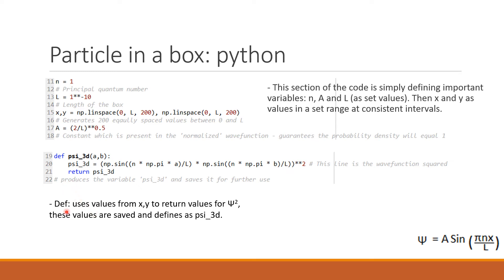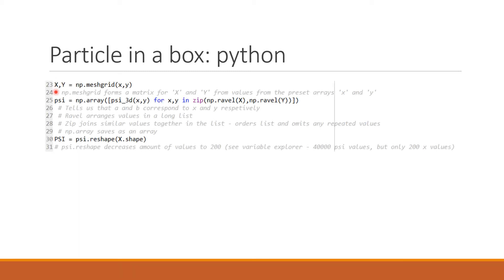We define the big X and Y axes based on the small x, y values defined earlier. The np.meshgrid function creates a matrix for the X, Y values based on those small x, y values. To deal with our psi values, we use a few functions: np.ravel creates a flattened array — essentially a long list of all the values. The zip function groups similar values together in the list and omits any repeated values. Finally, np.array saves this long list as an array.